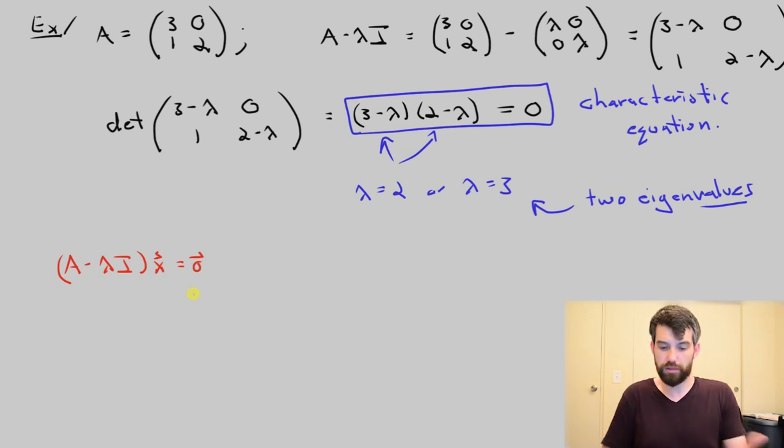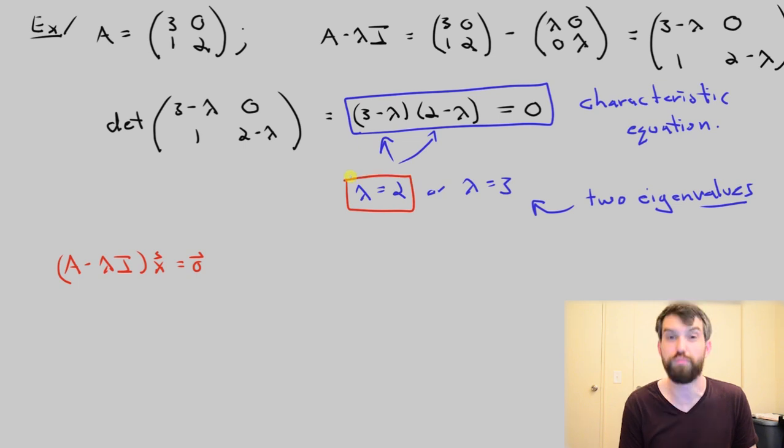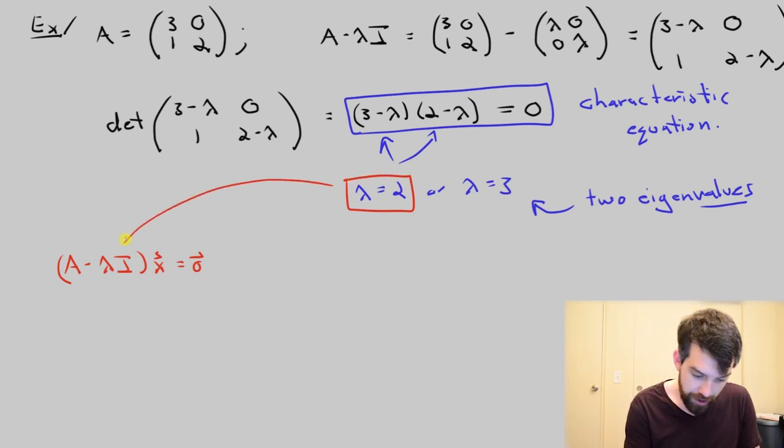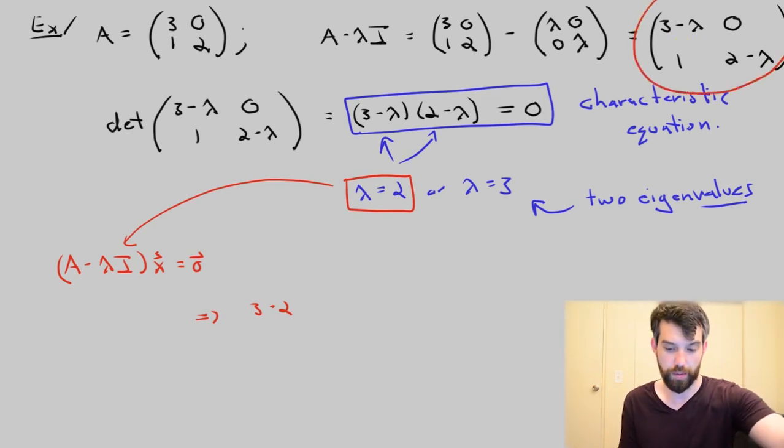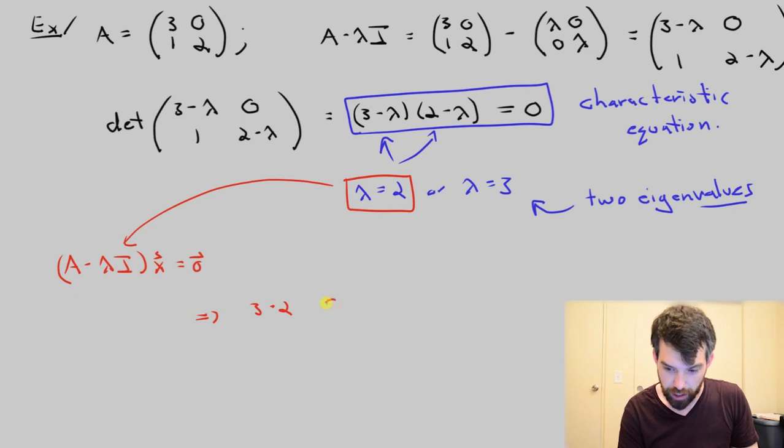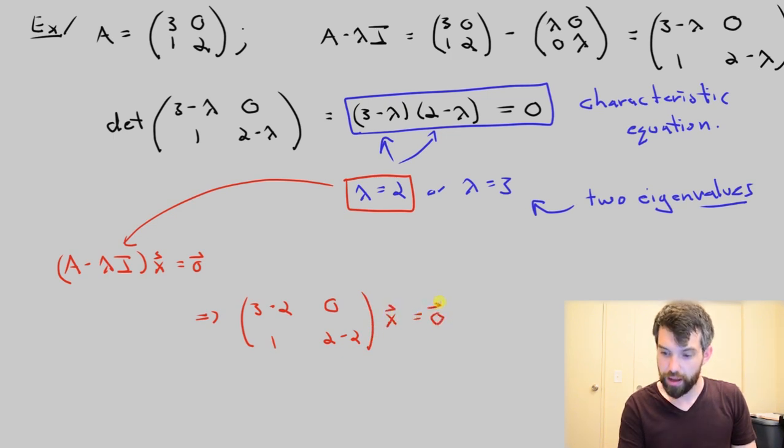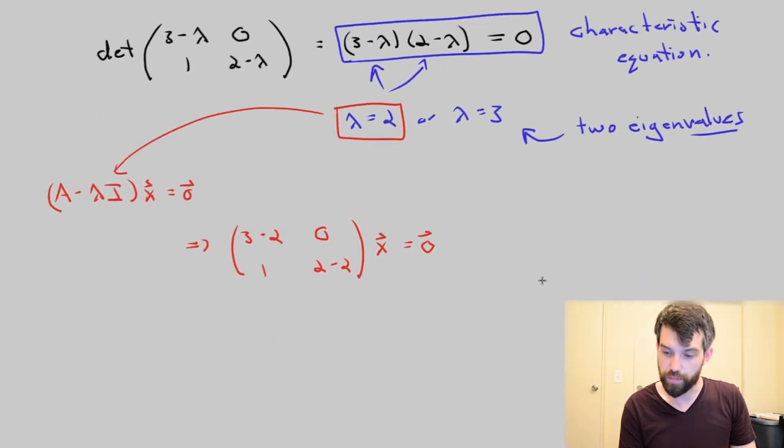So let's just plug in one of these values. How about we choose lambda equal to 2 first? For no special reason, I'm just going to put it in and let's fire it into there. So what do we get? I get 3 minus 2. Notice that this is the matrix that I'm doing right over here. So I'm putting in 3 minus 2, 0, 1, 2 minus 2. And then I'm setting x is equal to 0.